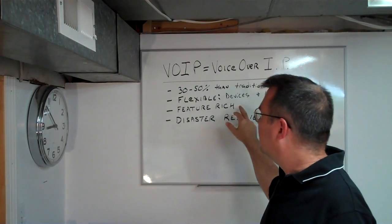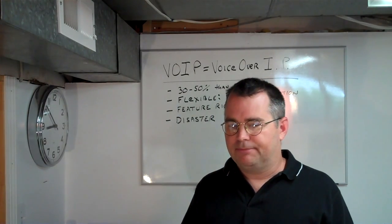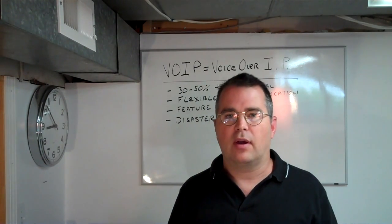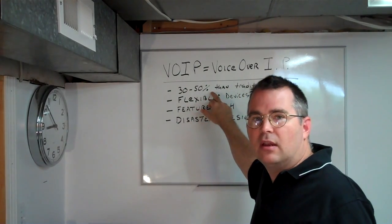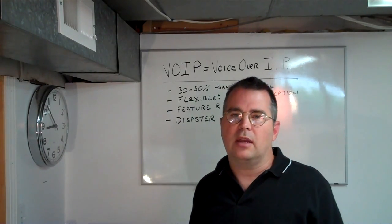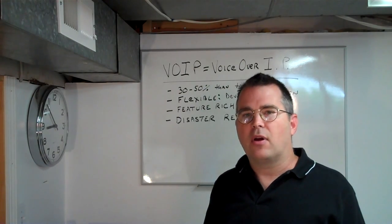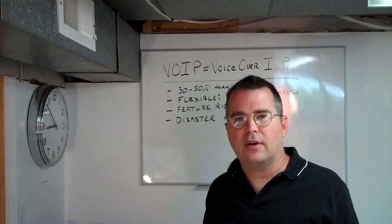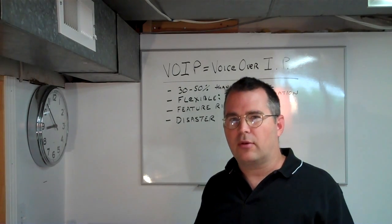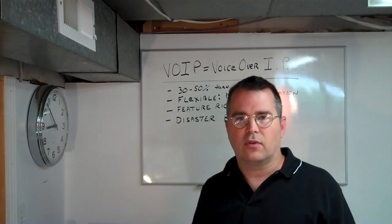VoIP is also feature rich, meaning all those things you'd normally pay extra for — like caller ID, call waiting, three-way calling — are generally included in the flat price for a voice over IP line. Your typical AT&T line after taxes runs about $55 a month, whereas a VoIP line is generally $20 to $30 a month plus maybe $3 to $5 in taxes. There are VoIP lines close to free, but I personally don't recommend any services to clients unless they're in that $20 to $30 range, because those tend to be the providers with good customer service, reliability, and the redundancy you need for commercial operation.